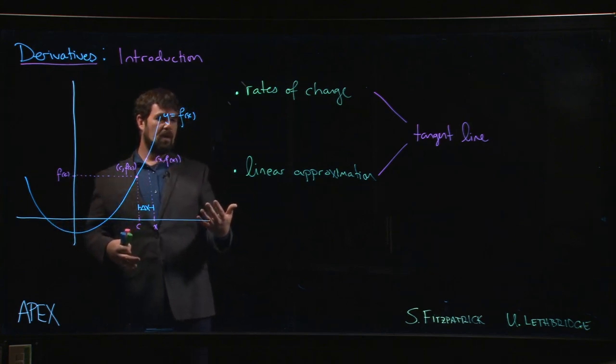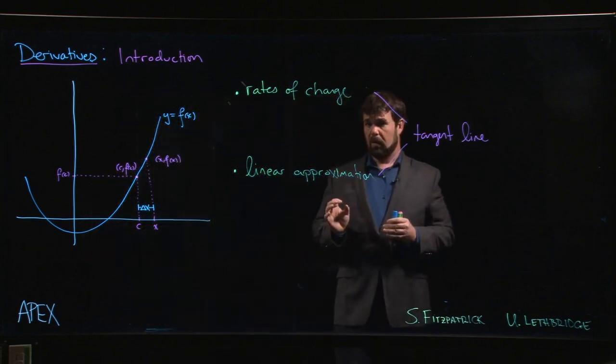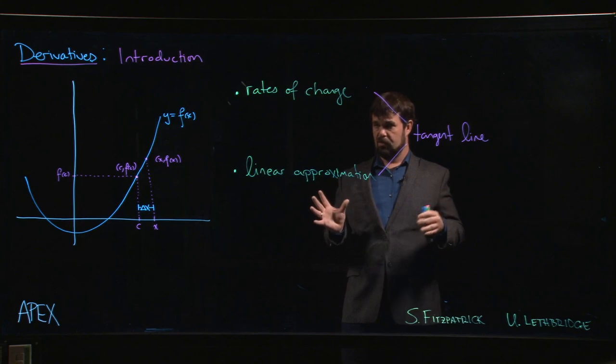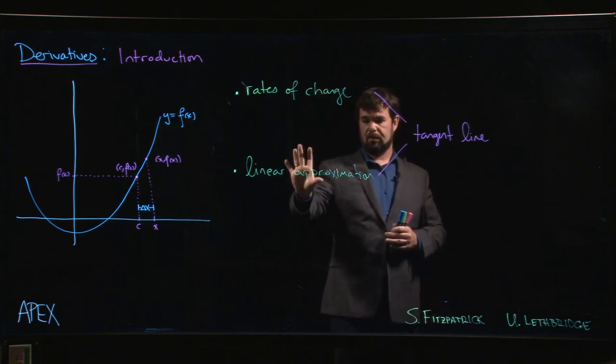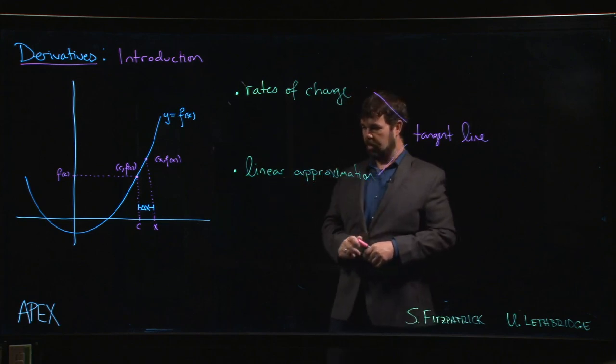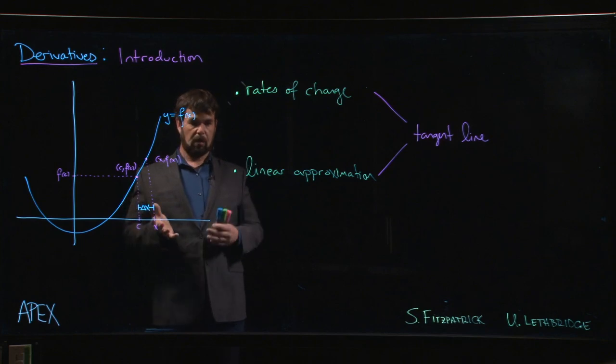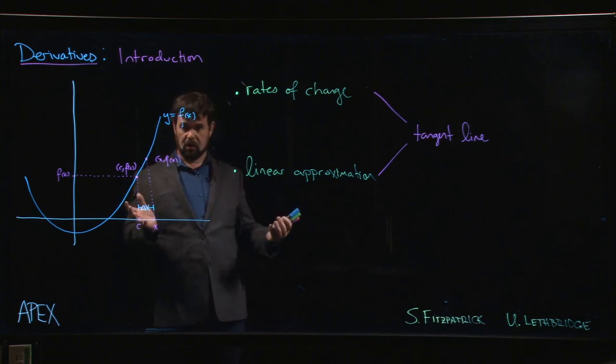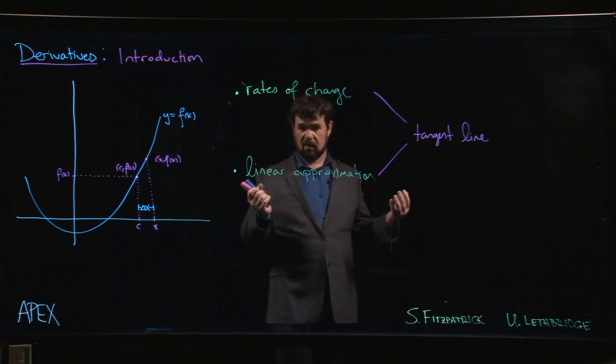We talk a lot about graphs and tangent lines and slopes, which seems a little bit apart from where derivatives are typically used in practice, which is probably rates of change and linear approximation. Linear approximations come up when you have some function, probably because you're modeling some real-world problem, and the function is sufficiently complicated.